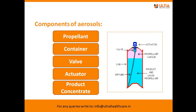Components of aerosols: first is propellant, second is container, third is valve, fourth is actuator, and fifth is product concentrate. These are all the components of aerosols which are used to formulate aerosols.